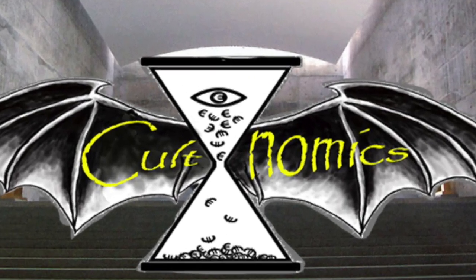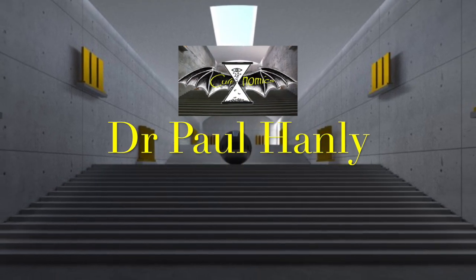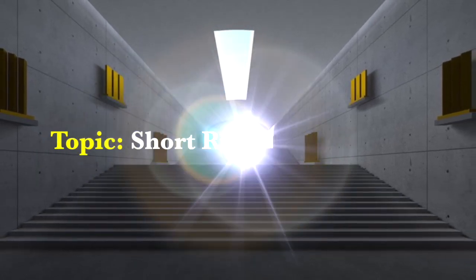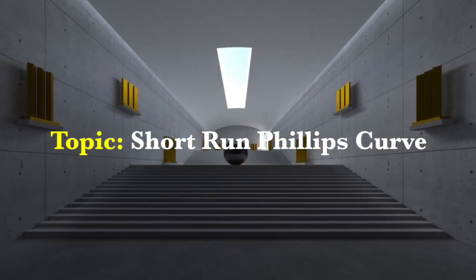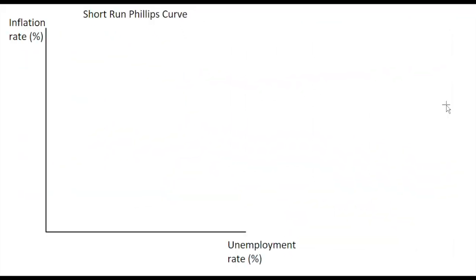Hi guys and welcome to Cultnomics. My name is Paul Henley and today I'm going to be chatting to you about the short run Phillips curve. In this video we're going to examine the concept of the short run Phillips curve, and this Phillips curve looks at the relationship between two things in the economy: the inflation rate up here on the y-axis and down on the x-axis, the unemployment rate.